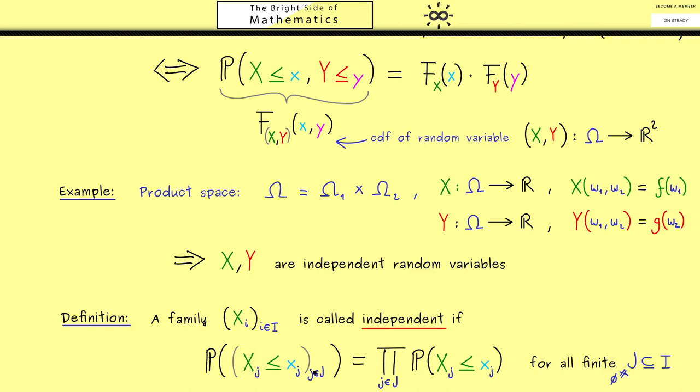Now in summary, if this equality holds for all real numbers lowercase x_j, then we call the family of random variables independent. So you see, it's the straightforward generalization of the independence we had for two random variables above.